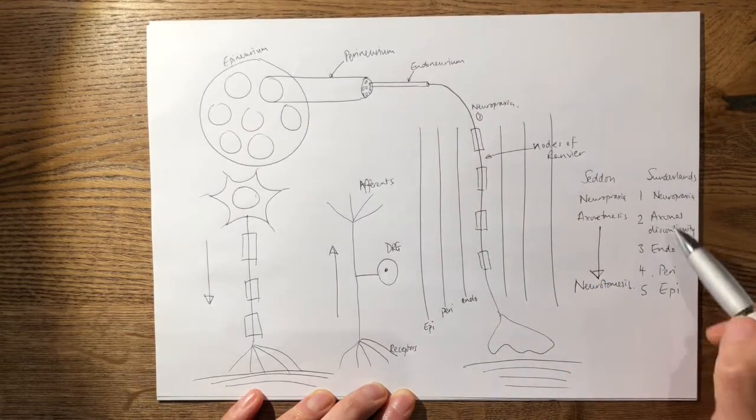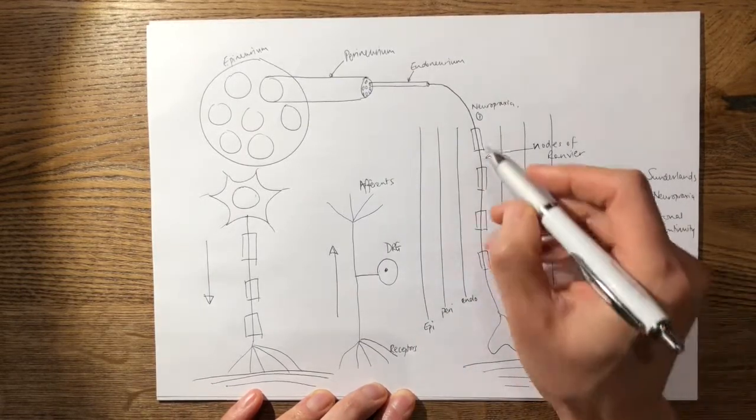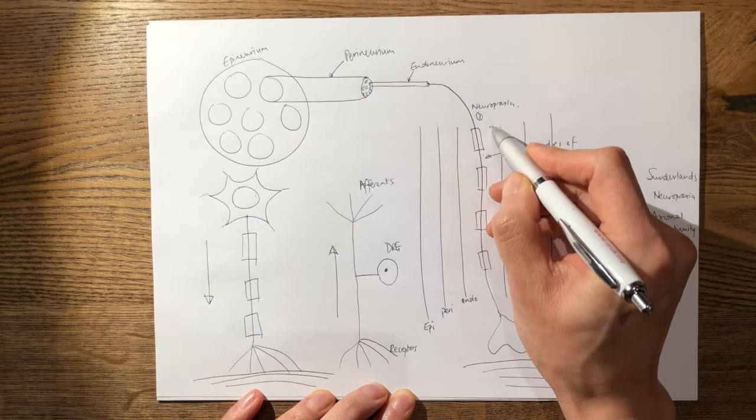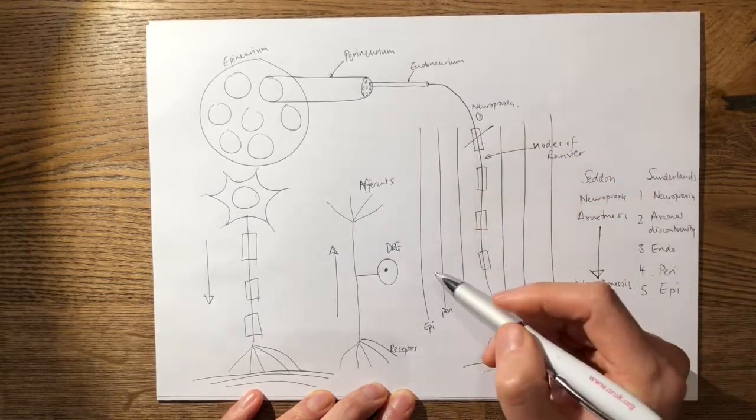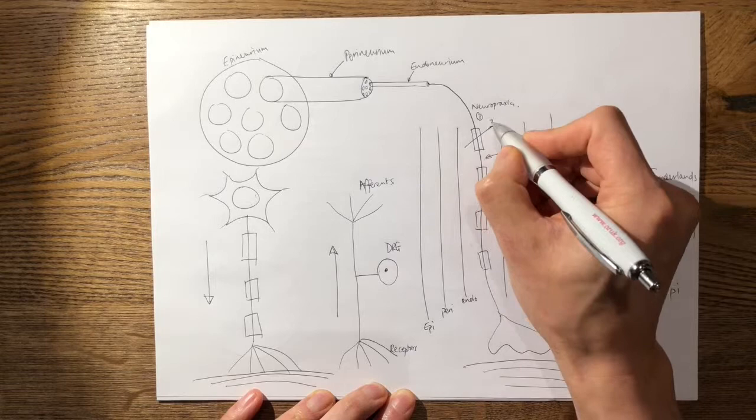However, a Sunderland two, where you have the axonal discontinuity, you get interruption of the axon and the myelin sheath. So that's number two.